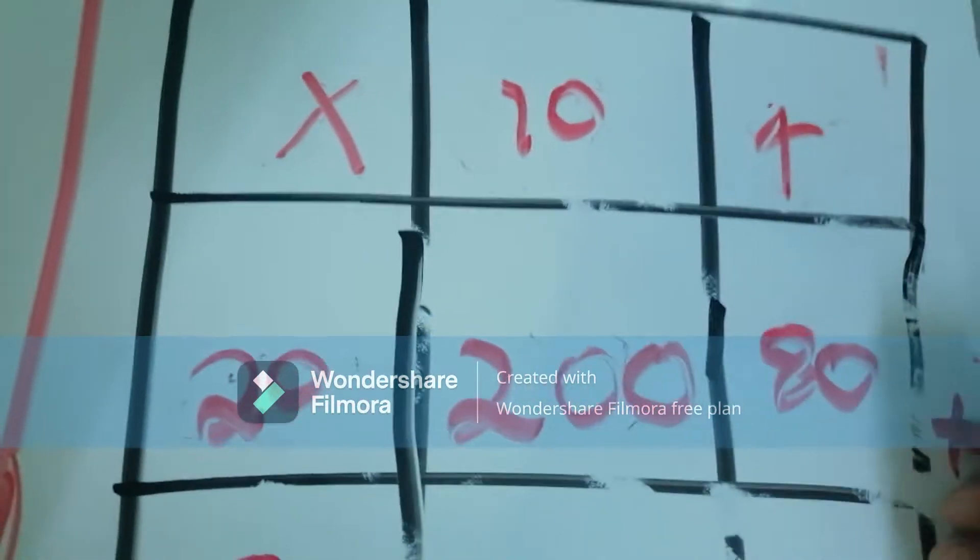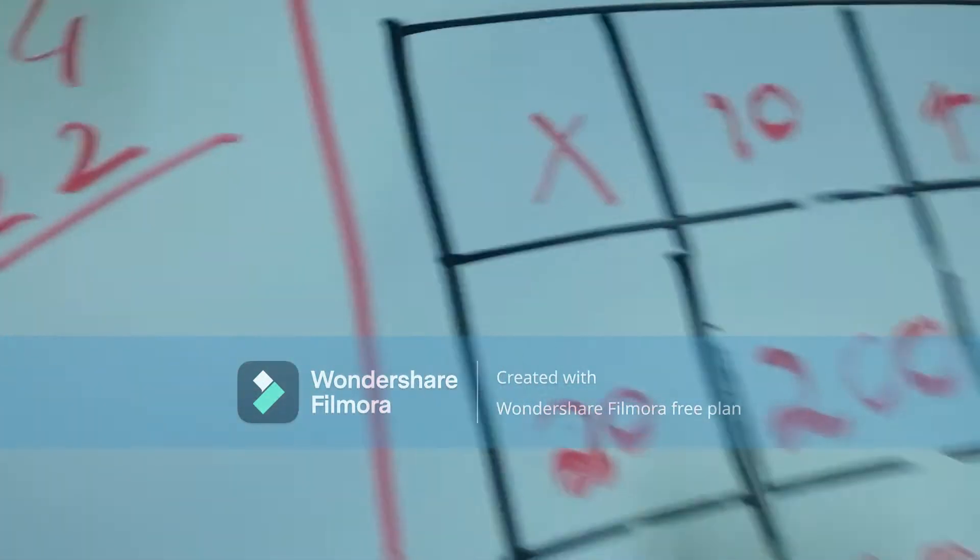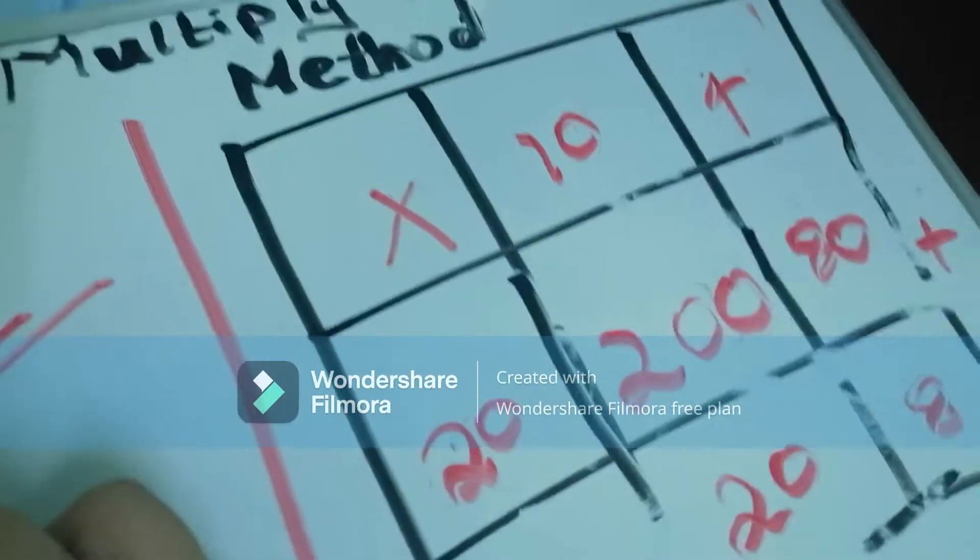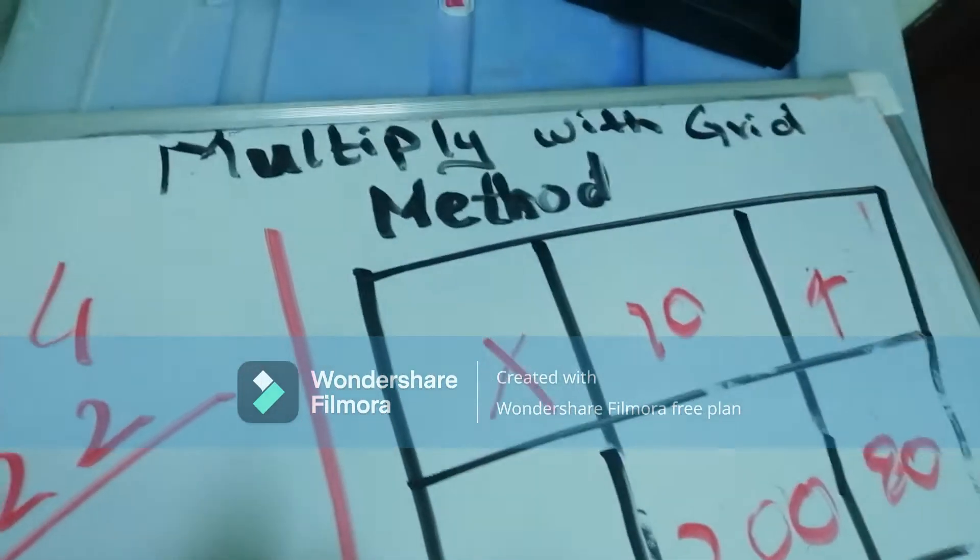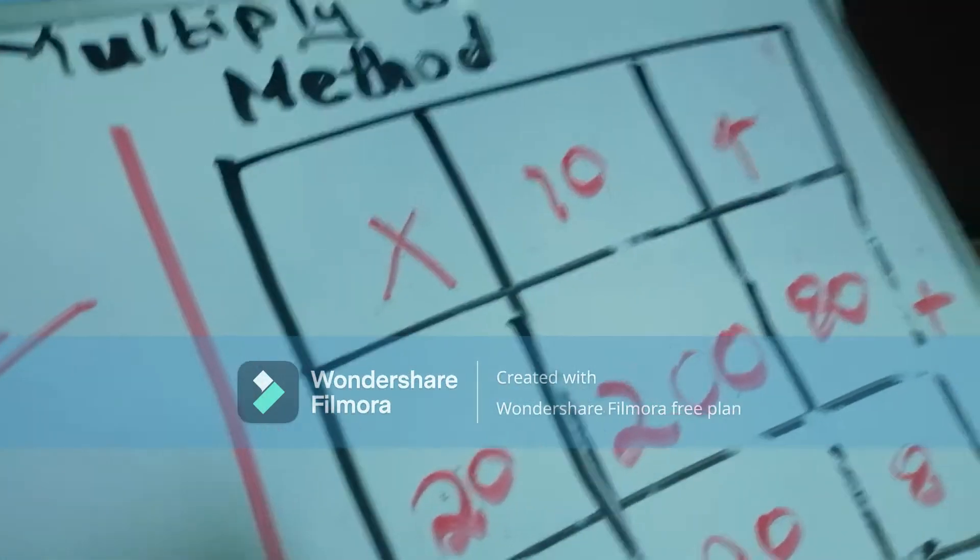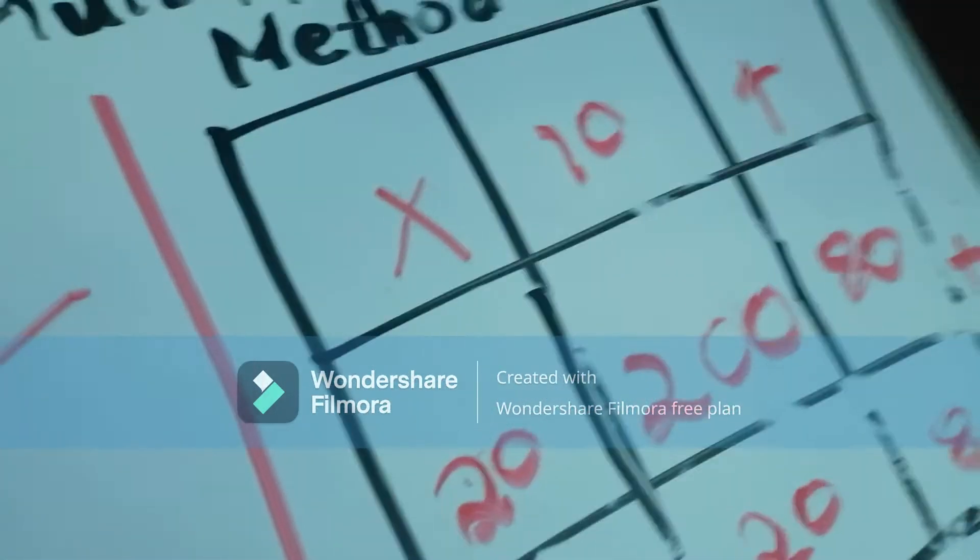Then we have to add these: 200 plus 80 plus 20 and 8.